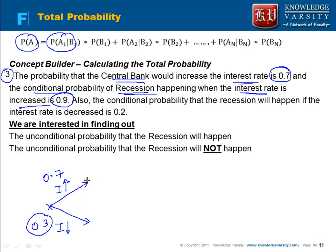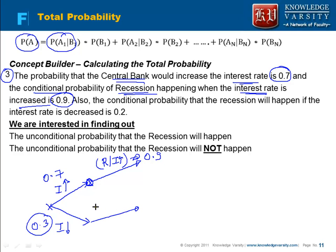The conditional probability of recession happening when the interest rate is increased is 0.9. Also, the conditional probability that recession will happen if the interest rate is decreased is 0.2.